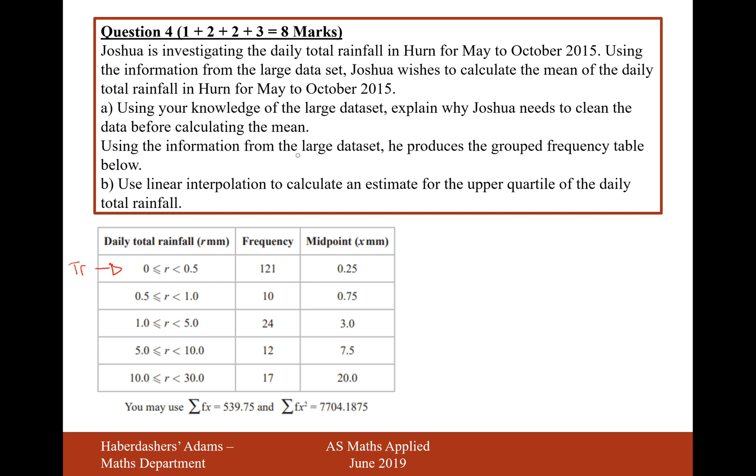Using the information from the large data set, he produces the grouped frequency table below. Use linear interpolation to calculate an estimate for the upper quartile of the daily total rainfall. So the upper quartile is the three-quarter way mark. Now we need to work out how much data we have here, and if we add all of this up, N is going to equal 184.